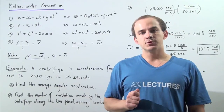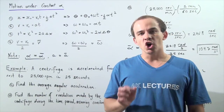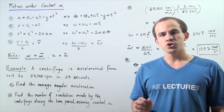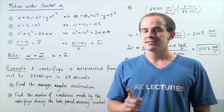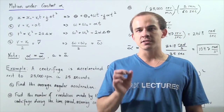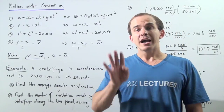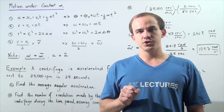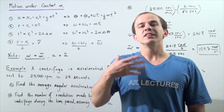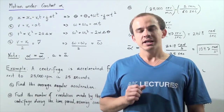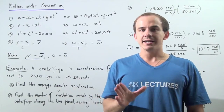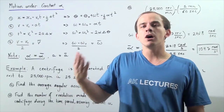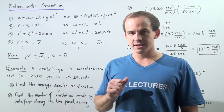Recall that whenever an object is undergoing translational motion under constant linear acceleration, we can derive four kinematics equations that allow us to calculate a certain unknown variable knowing the other quantities.